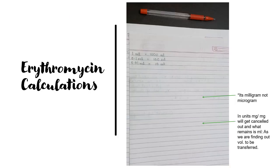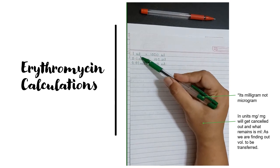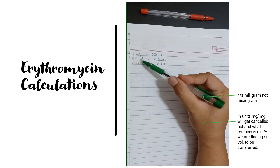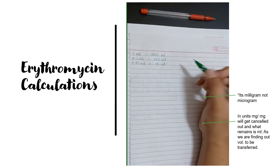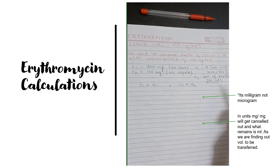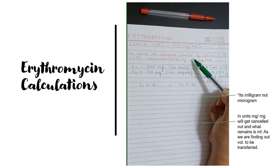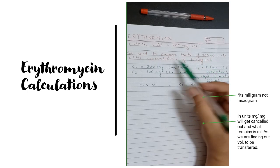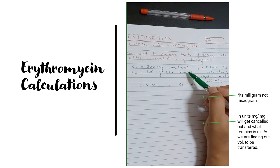Before starting the calculations for gentamicin and erythromycin, a quick revision: 1 ml equals 1000 µl (microliters), 0.1 ml equals 100 microliters, and 0.01 ml equals 10 microliters. You need these conversions in calculations. Now let's start with erythromycin. We will assume we have a stock vial of 200 mg per ml, and we need to prepare 200 ml of LB (Luria-Bertani) broth with a concentration of 100 micrograms per ml.